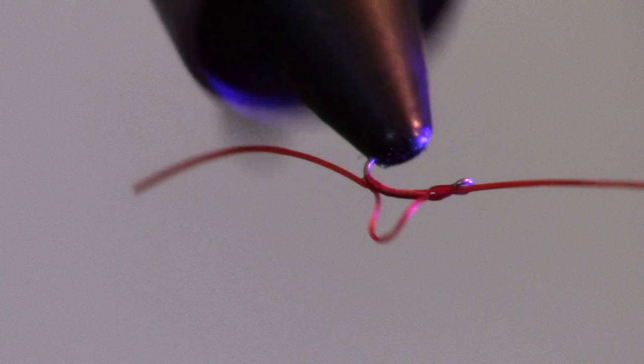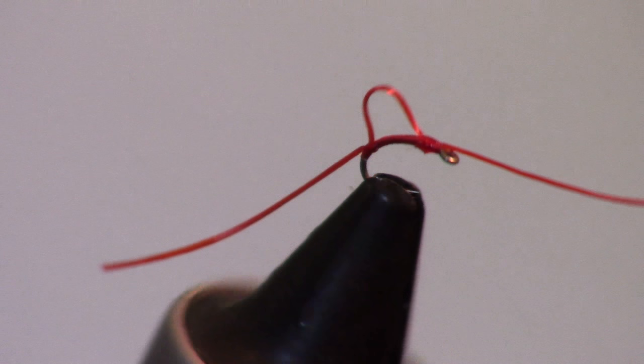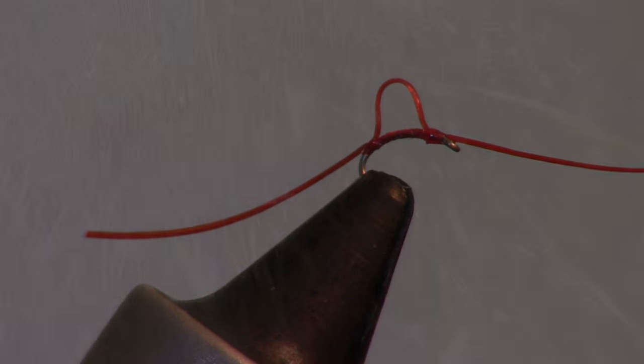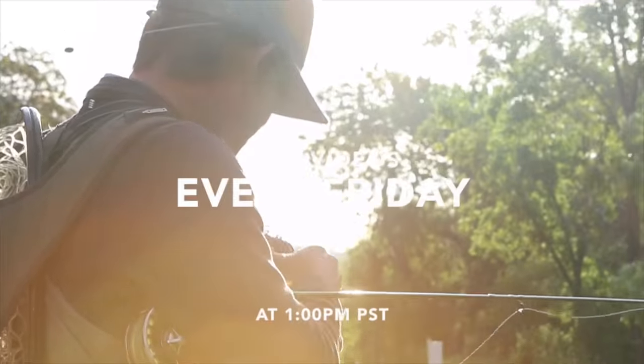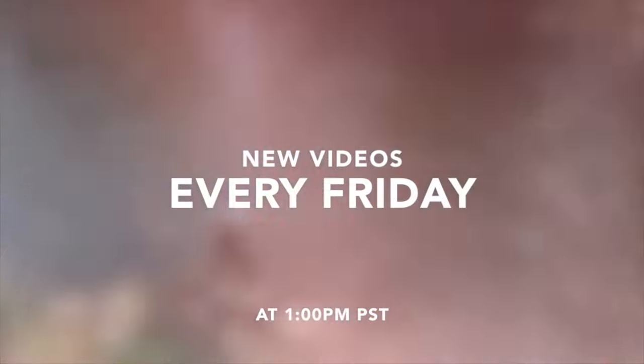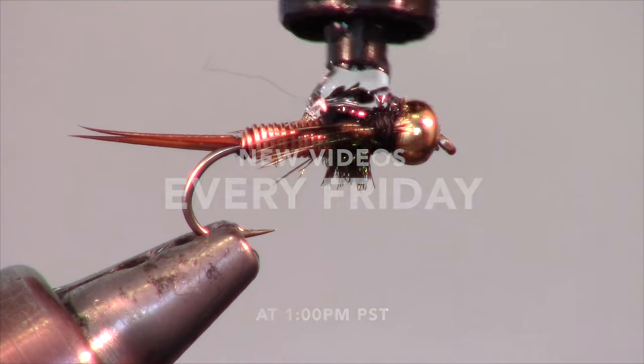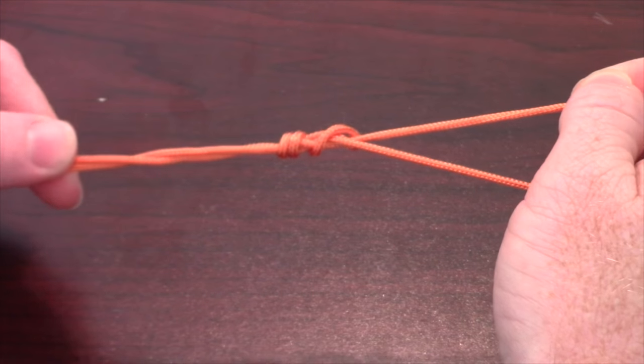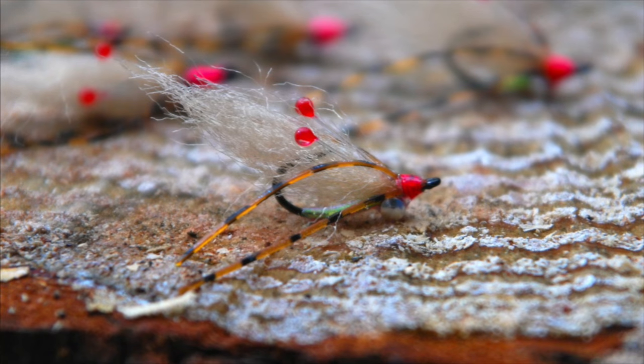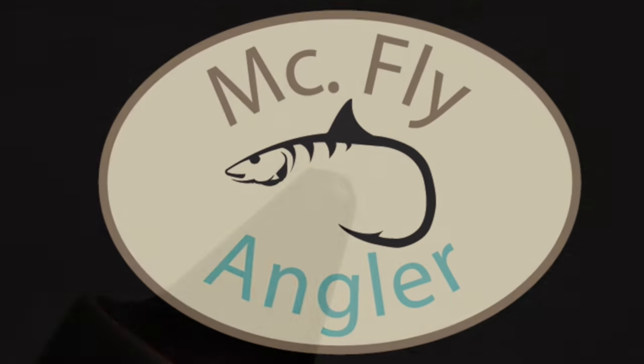This super squirmy worm is a great San Juan worm variant that really works. For a hook, I like using a scud hook like this Umpqua U201 in size 14-24.